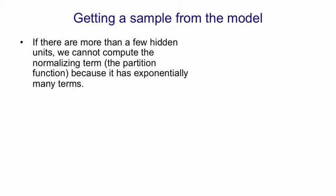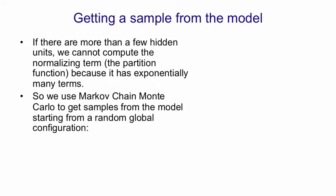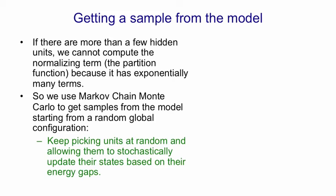Now let's ask how we get a sample from the model when the network's bigger than that. Obviously in the network we just computed we can figure out the probability of everything because it's small but when the network's big we can't do these exponentially large computations. So if there's more than a few hidden units we can't actually compute that partition function. There's too many terms in it. But we can use Markov chain Monte Carlo to get samples from the model by starting from a random global configuration and then picking units at random and updating them stochastically based on their energy gaps.